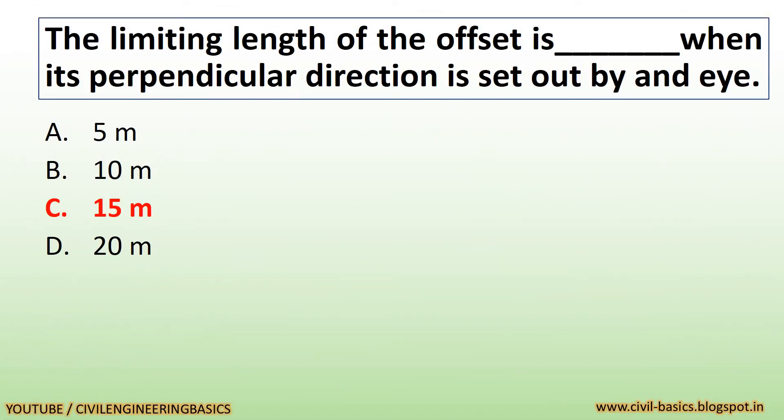The limiting length of the offset is 15 m when its perpendicular direction is set out by eye.